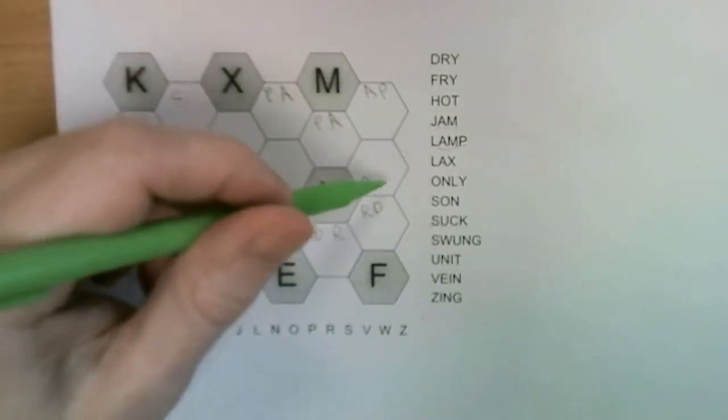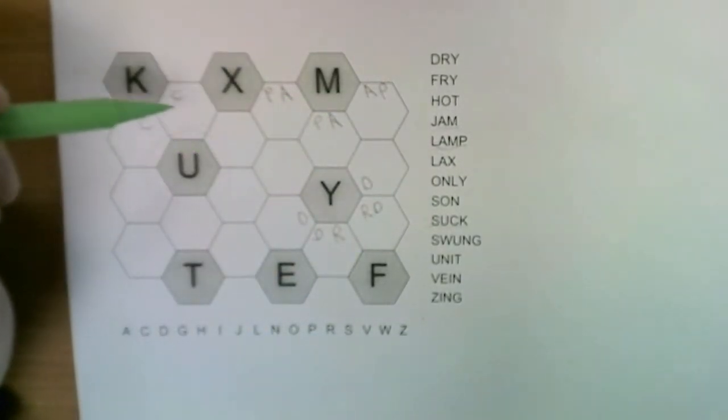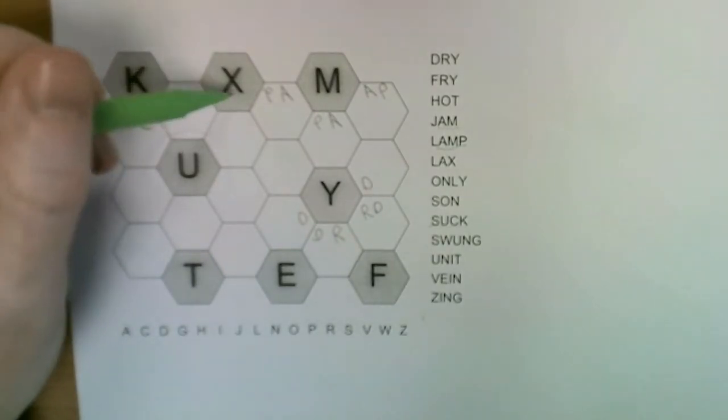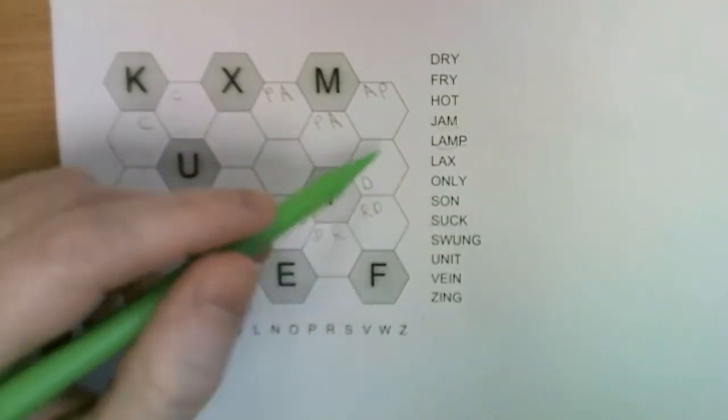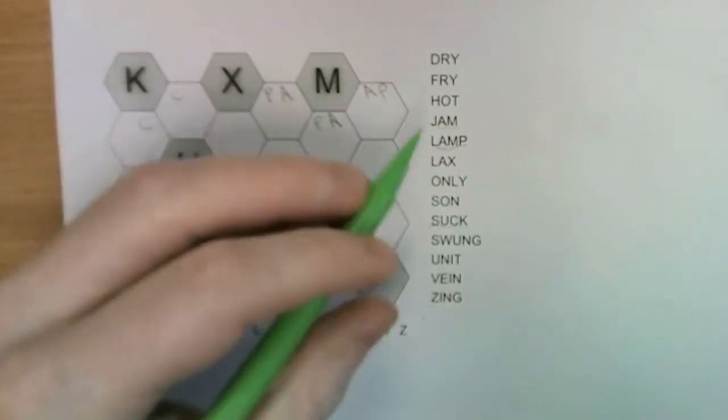Then we have the L which can go in quite a few different squares, and the J in quite a few different squares. Now let's look at the X.